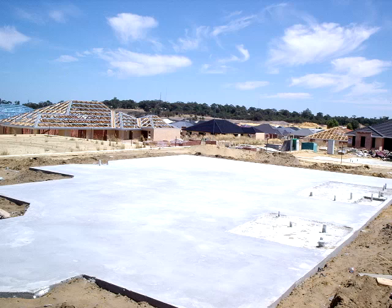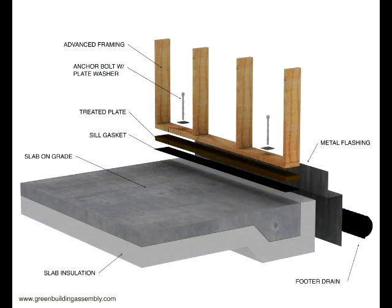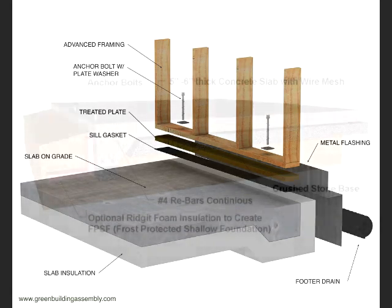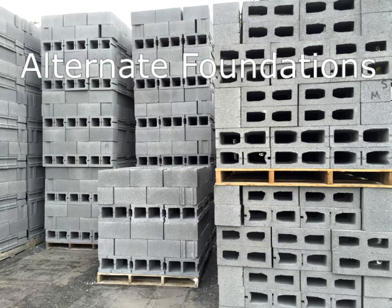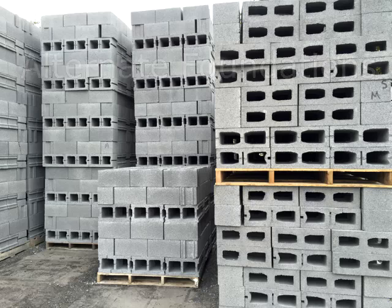With a full basement or crawl space, you have wood floor joists and a subfloor of plywood or OSB. With slab on grade, the concrete is your floor. A slab on grade can also be monolithic, meaning it has a turndown — a thickened perimeter — that serves as both the footing and the slab combined. Now let's look at alternative foundation systems, starting with CMU — concrete masonry unit, also called concrete block or cinder block.